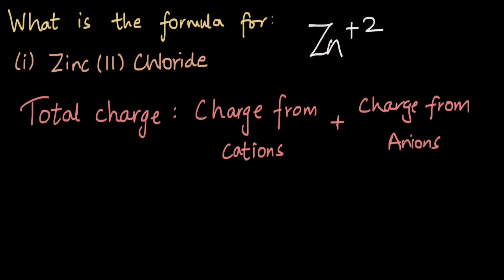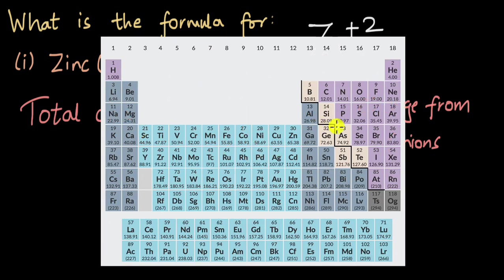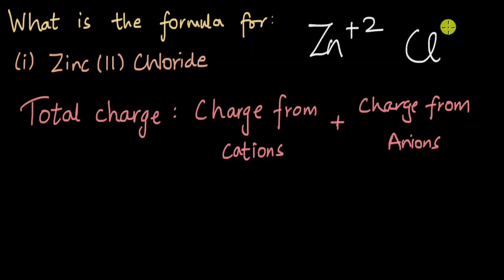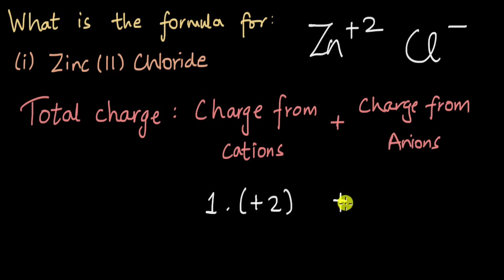For chloride, we can have a look at the periodic table. Chloride lies over here in group 17, which means it has to gain one more electron to form a complete octet. The chloride ion would be Cl⁻. Now the total charge has to be zero, so if we have a look at the two ions: we take one Zn²⁺ ion, that is one times plus two.